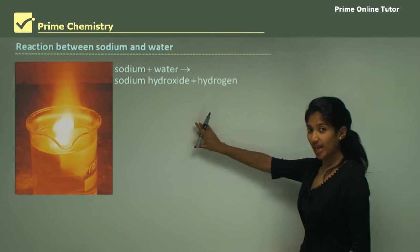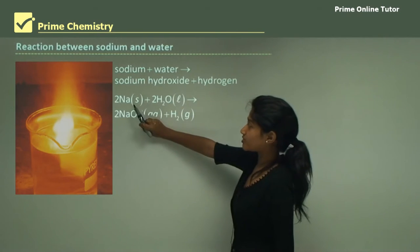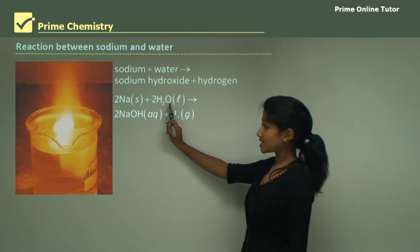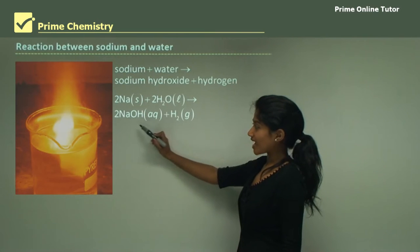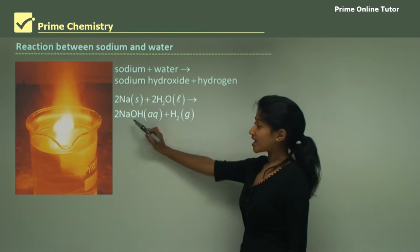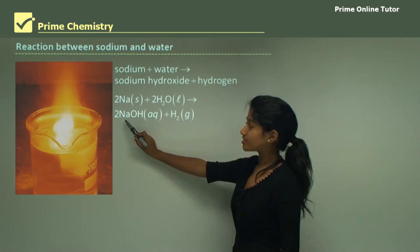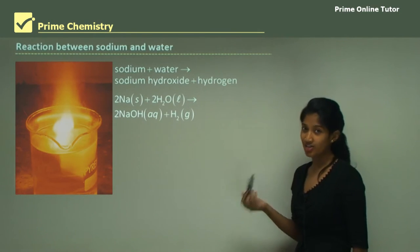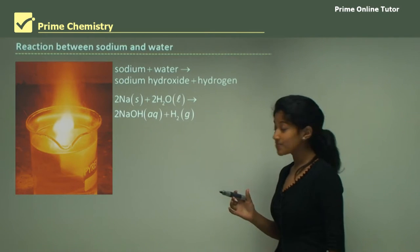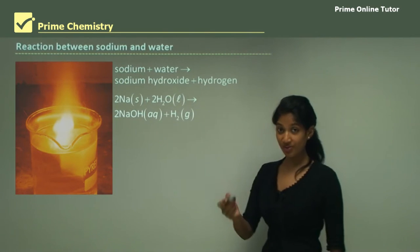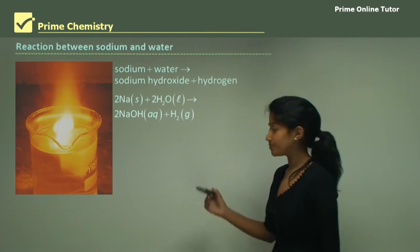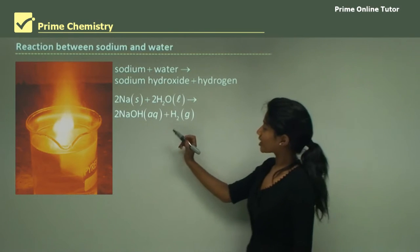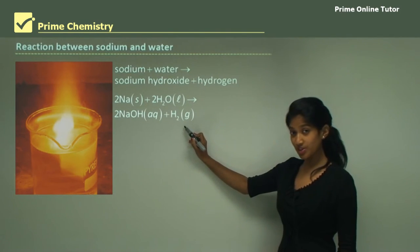Now let's write this in a chemical formula way. Here we have sodium reacting with water — sodium is Na and water is H2O. When they react they produce sodium hydroxide, which is NaOH. The hydroxide ion OH has a valency of minus 1 and sodium has a valency of plus 1, so in chemical formula it gives you NaOH. Then we have hydrogen gas being produced as well.